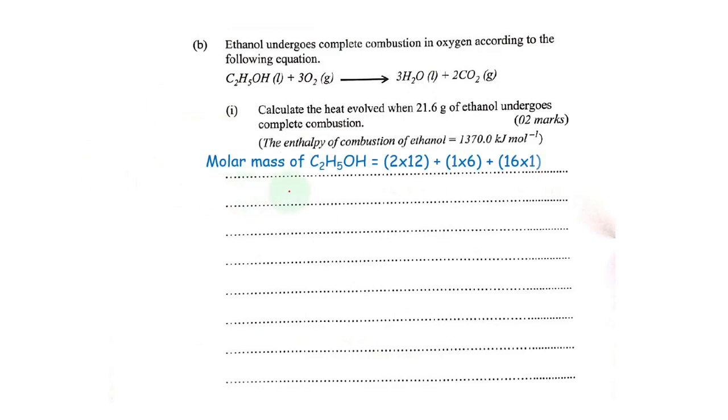So molar mass of ethanol will be 12 times 2 plus 1 times 6 (we have 6 hydrogen atoms), then plus 16 times 1, which is our oxygen. And then we shall get 46 grams. It means that one mole of ethanol actually has a mass of 46 grams. So that tells us that when we burn 46 grams of ethanol, we shall evolve this kind of heat.